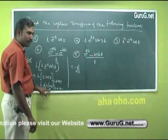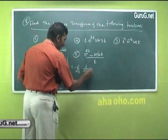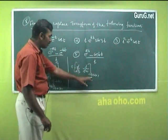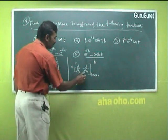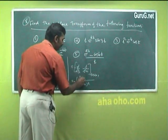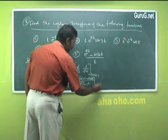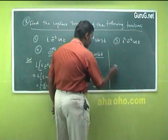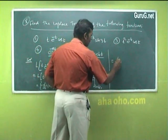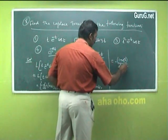Using the cos(at) formula: L{cos t} = s/(s² + 1). Then differentiate using the u/v formula: the result is (s² + 1)·1 minus s·2s, all over (s² + 1)², which simplifies to (1 - s²)/(s² + 1)².